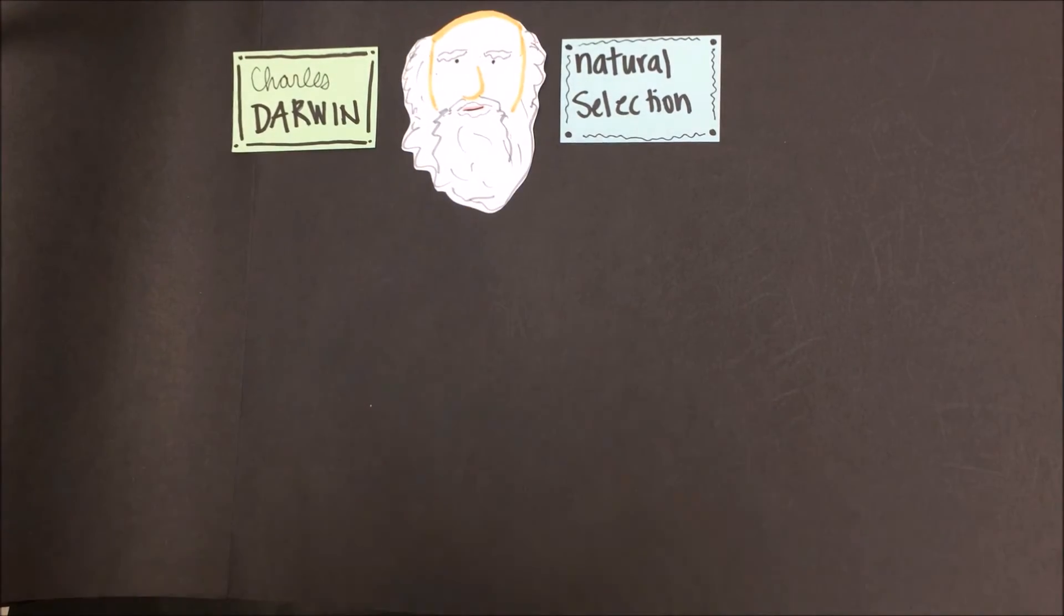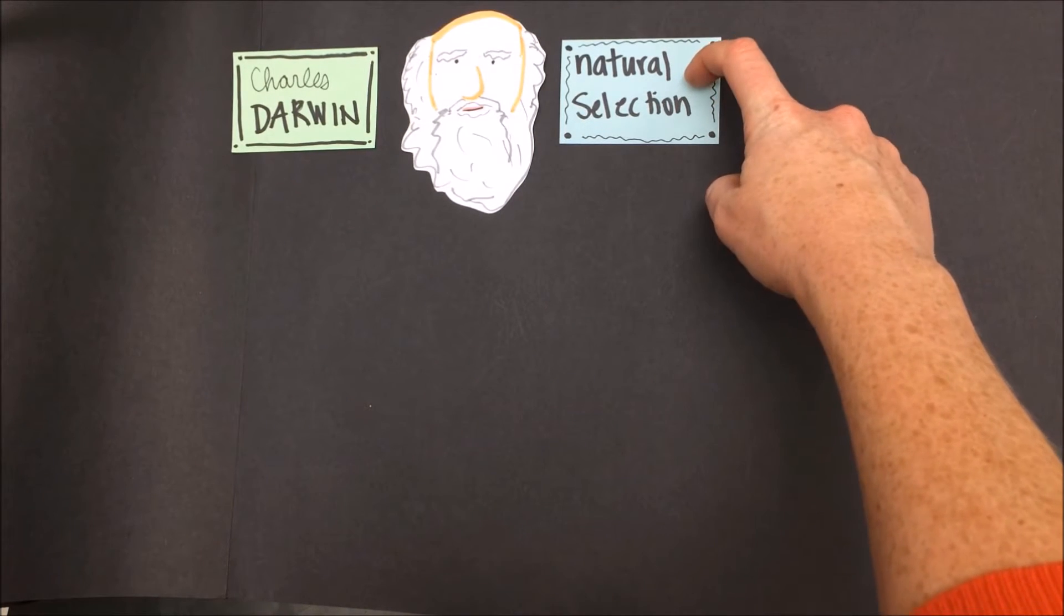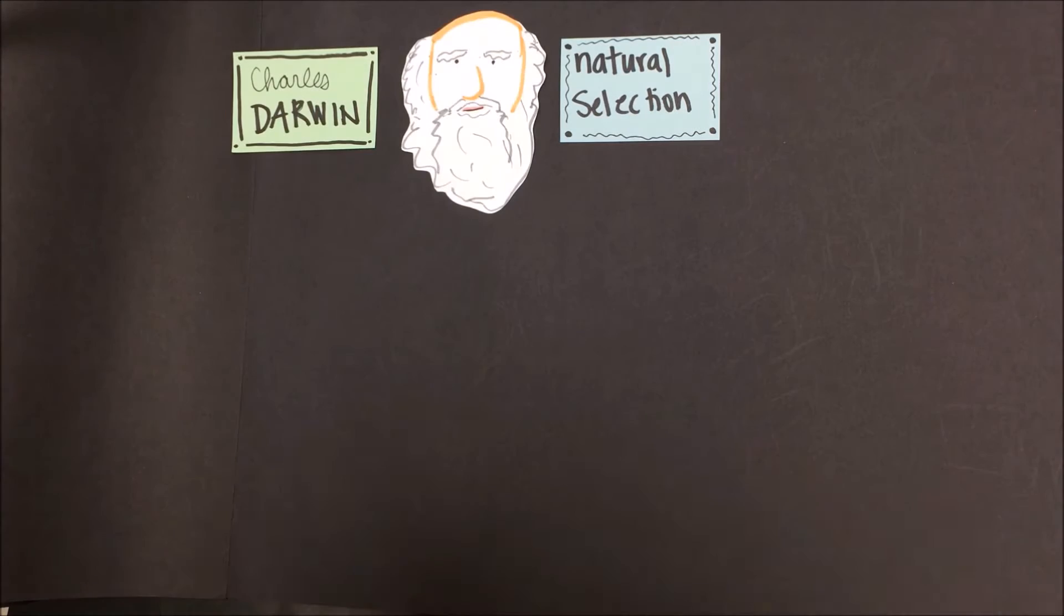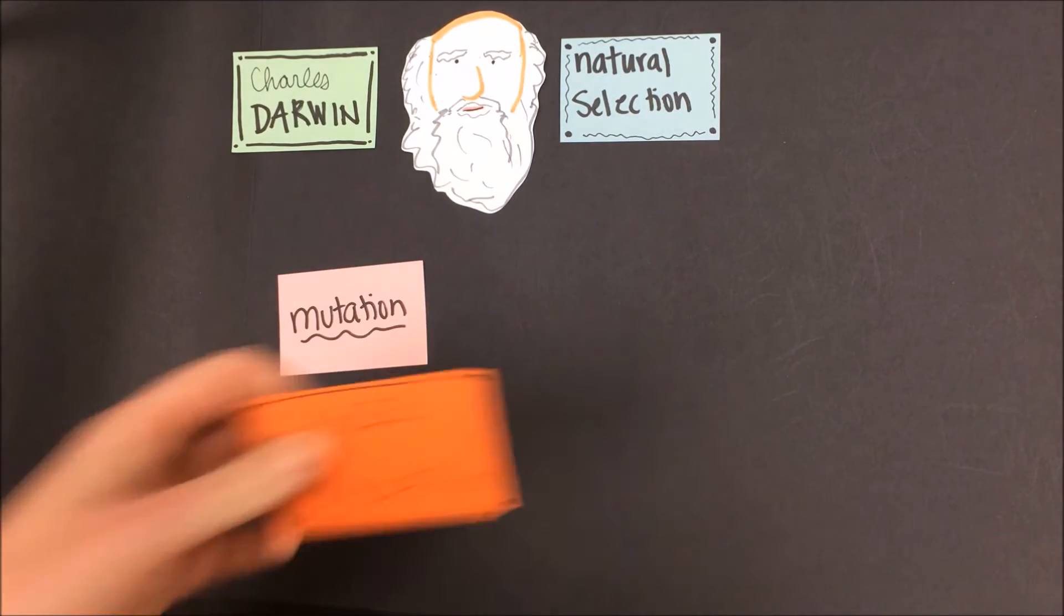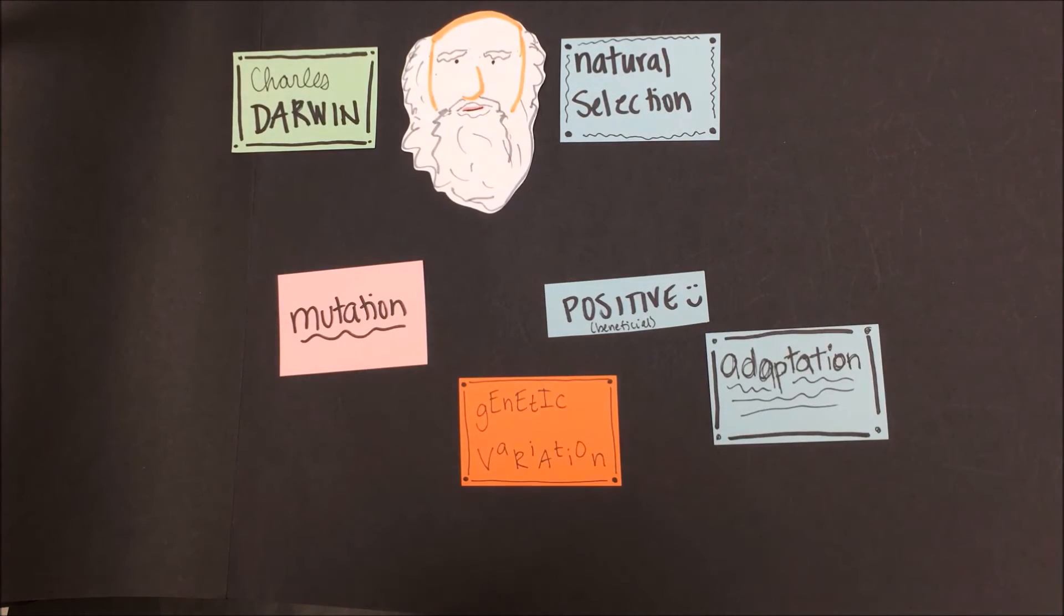A key part of this theory is to understand that it's natural selection. That is, nature is the aspect that's determining or selecting which traits are favorable. It's up to the environment to determine which mutations in all of this genetic variation are positive, and thus are adaptations. The environment or context is key.